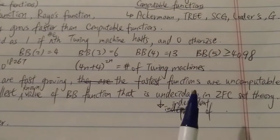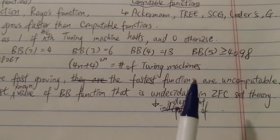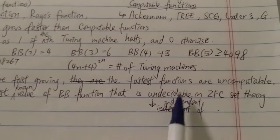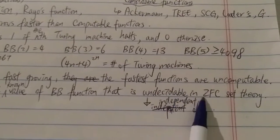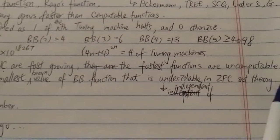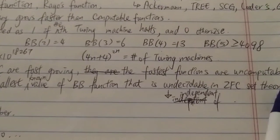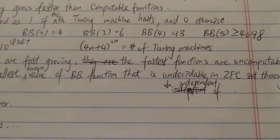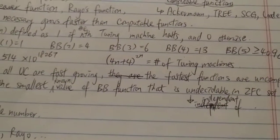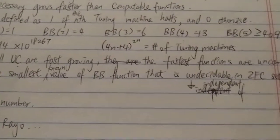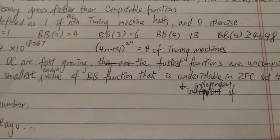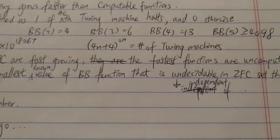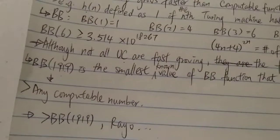What undecidable means is that you cannot prove it's true or you cannot prove it's false in the ZFC set theory. You cannot prove it will halt or not. It will just keep running, printing out more and more ones on an infinite tape, and you will never know if it's going to stop or not. That's why this number is bigger than any computable number.